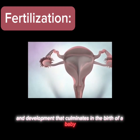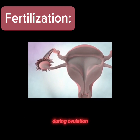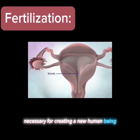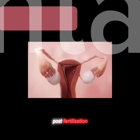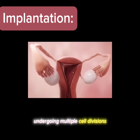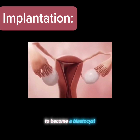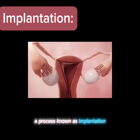This journey starts with the release of the mature egg during ovulation from the female's ovary. The egg holds half of the genetic information necessary for creating a new human being, while millions of sperm cells from the male partner embark on their journey. Post-fertilization, the zygote starts its journey down the fallopian tube, undergoing multiple cell divisions to become a blastocyst. Once it reaches the uterus, this blastocyst attaches itself to the uterine lining in a process known as implantation.